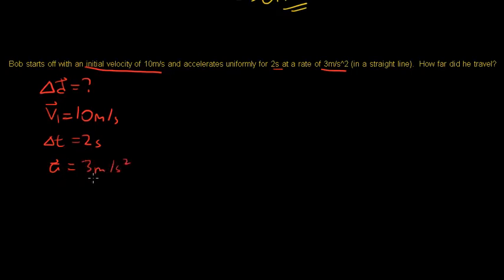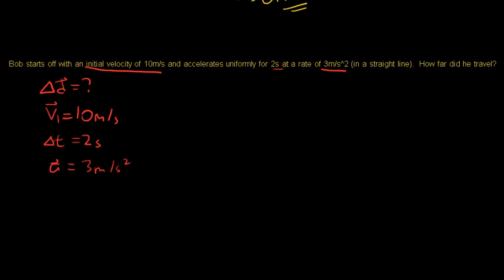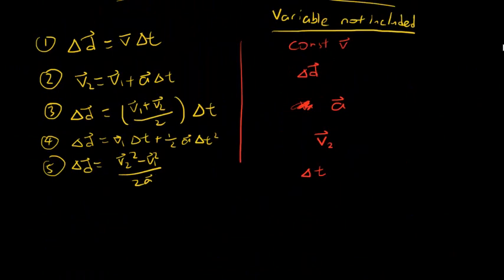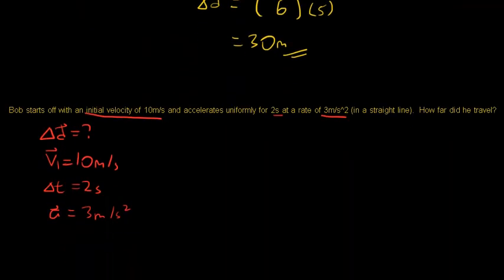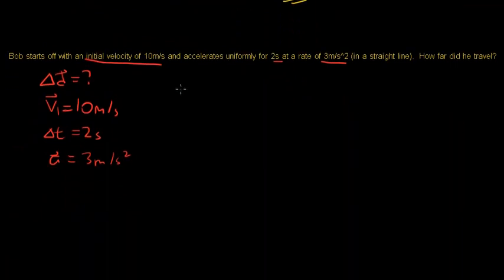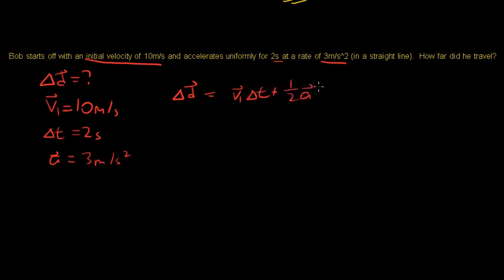We have displacement, v1, time, and acceleration — but no v2. So we use equation four, which contains only v1, time, acceleration, and displacement. Let's write equation four: displacement equals v1 times Δt plus half times acceleration times Δt squared.